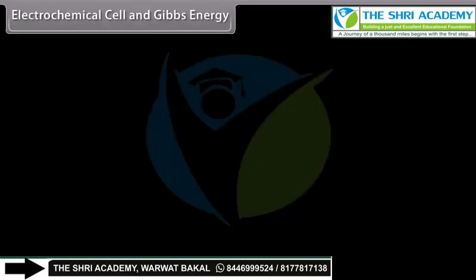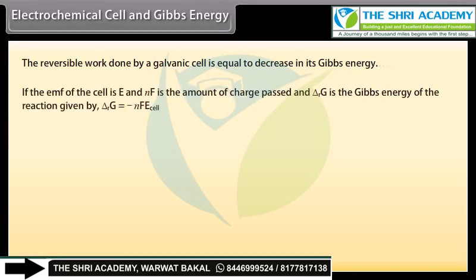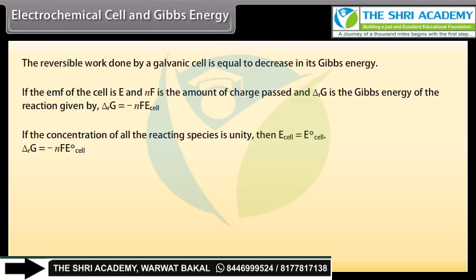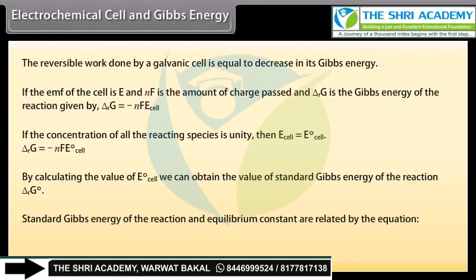Electrochemical Cell and Gibbs Energy: The reversible work done by a galvanic cell equals the decrease in its Gibbs energy. If the EMF of the cell is E and nF is the charge passed, then: ΔrG = −nF × E(cell). When concentration of all reacting species is unity, E(cell) = E°(cell), so: ΔrG° = −nF × E°(cell). By calculating E°(cell), the standard Gibbs energy ΔrG° can be obtained. Standard Gibbs energy and equilibrium constant are related by: ΔrG° = −RT × ln K.